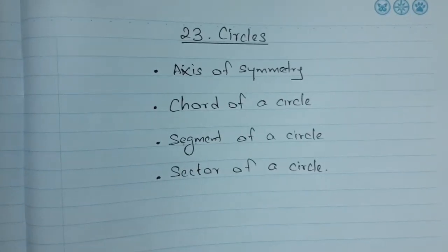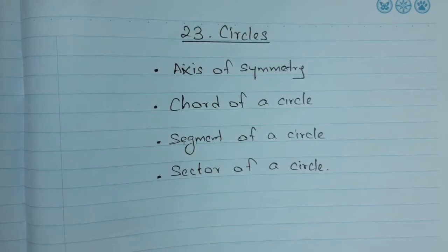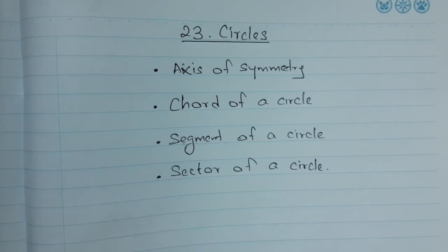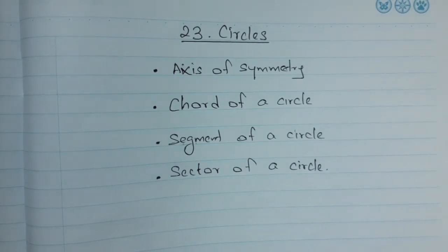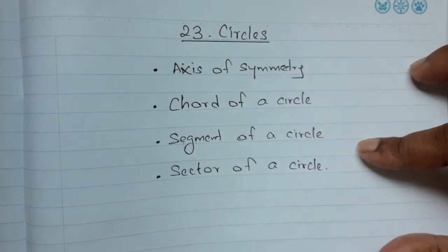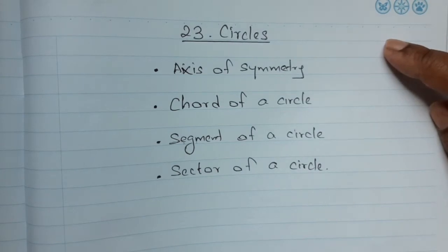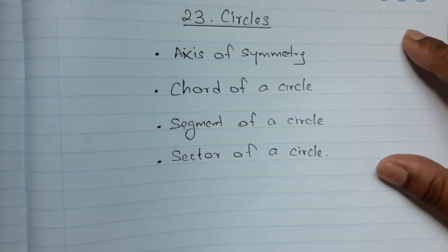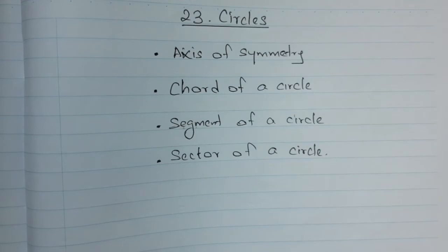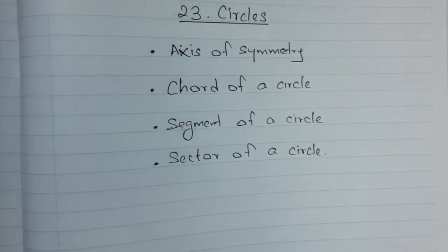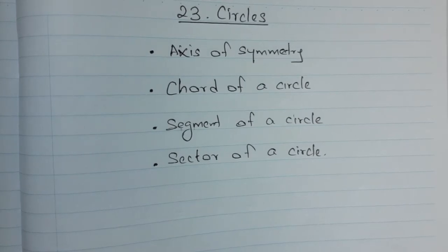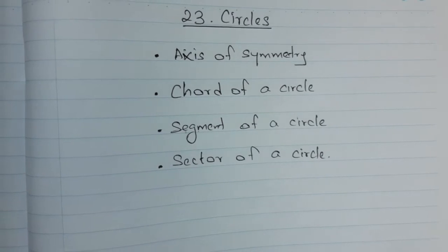Hello, my dear children, welcome back to my channel — happy learning mathematics! Today we will be learning the 23rd chapter of your lesson, which is circles. You might have already learned about circles in grades 6 and 7. We will be covering four main topics today: axis of symmetry, chord of a circle, segment of a circle, and sector of a circle. This is a very short lesson with simple keywords regarding circles.